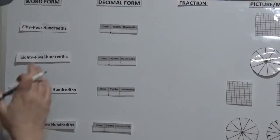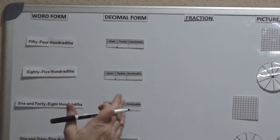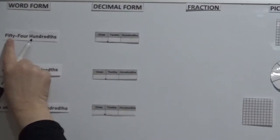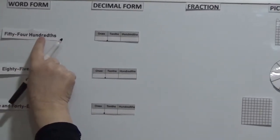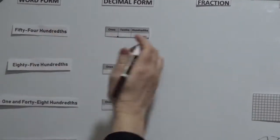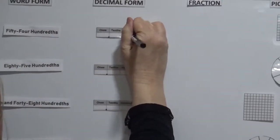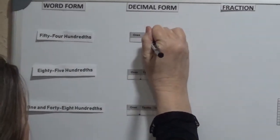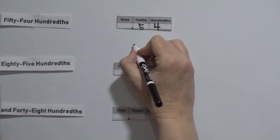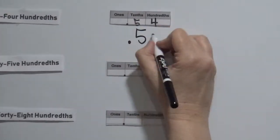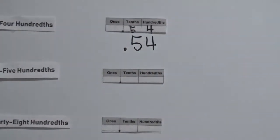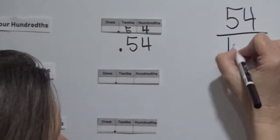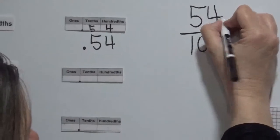We're going to start off with hundredths. Hundredths is the pennies. In this case we have fifty-four hundredths. So the decimal form is 0.54, and the fraction of that would be fifty-four out of a hundred.